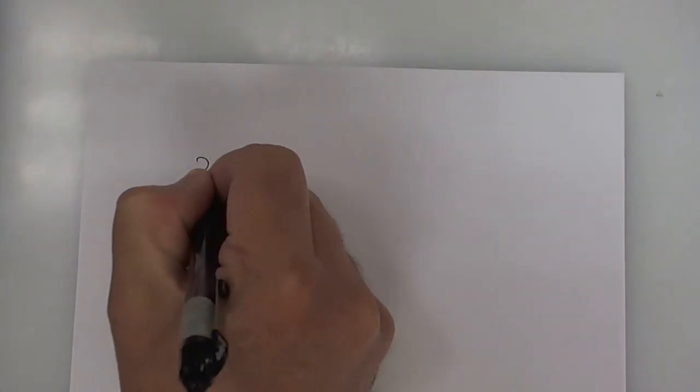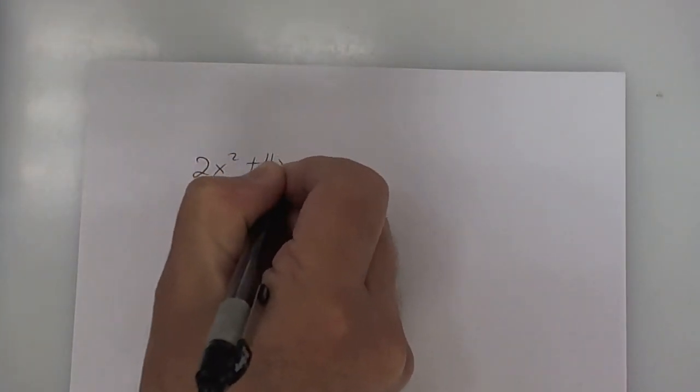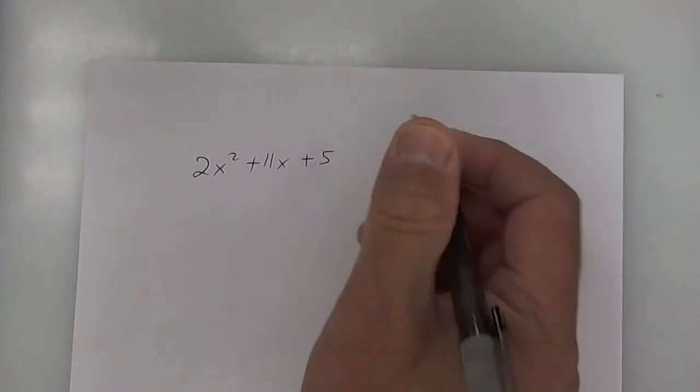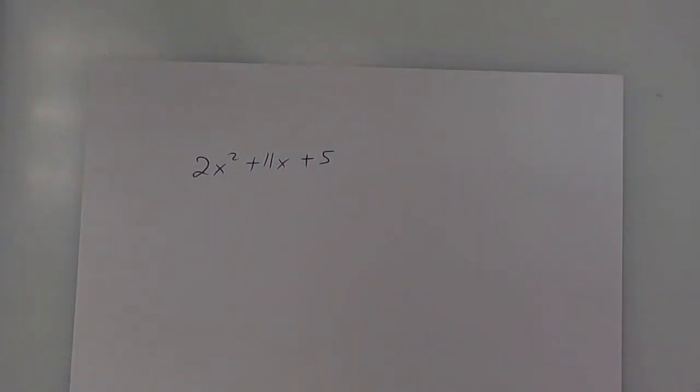Let's try one more. I'm going to do one more with you, then I'm going to give you your worksheet. Try 2x squared plus 11x plus 5. Use the quadratic equation, and then write it as a factor.